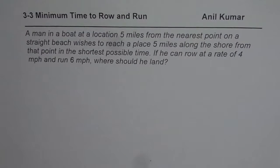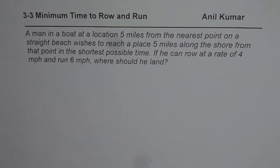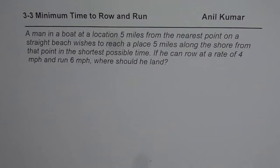I'm Anil Kumar and here is a very interesting optimization question. A man in a boat at a location 5 miles from the nearest point on the straight beach wishes to reach a place 5 miles along the shore from that point in the shortest possible time. If he can row at a rate of 4 miles per hour and run 6 miles per hour, where should he land?